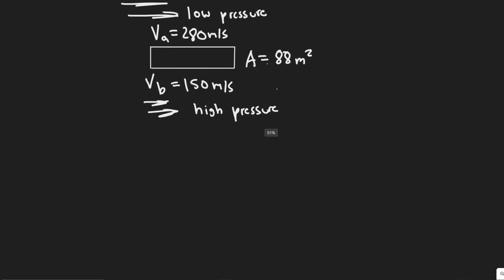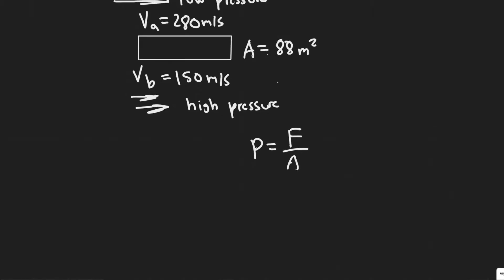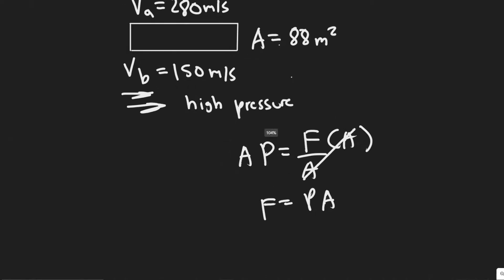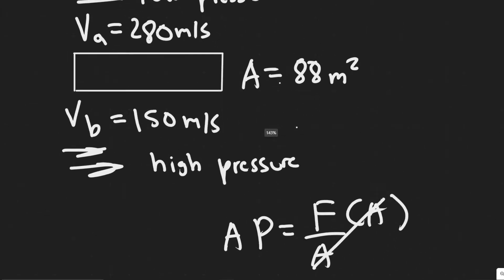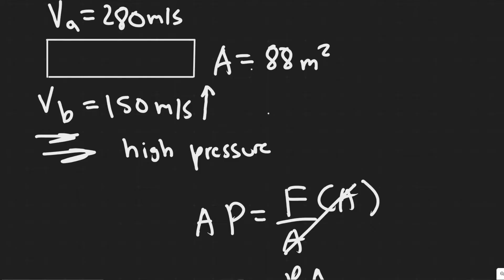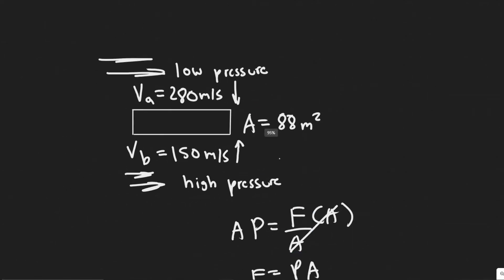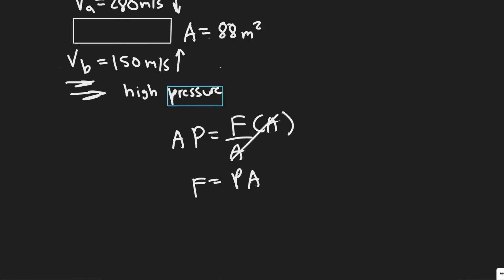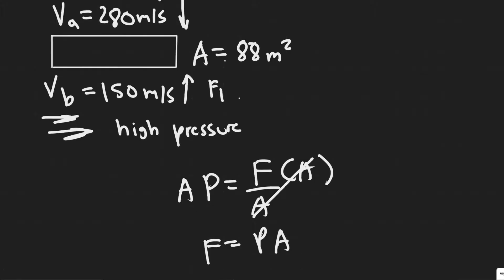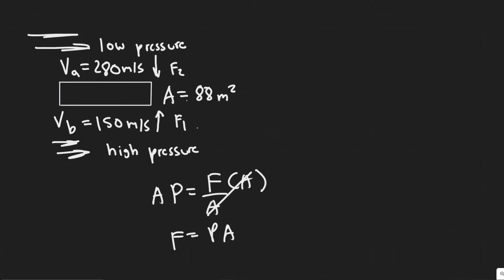Pressure equals force over area. As a result, force equals pressure times area. Notice there's going to be a lift force generated by this pressure — the high pressure on the bottom generates an upward force on the wing area, while the low pressure on top acts downward. But the bottom pressure is much higher, so F1 is much greater than F2. Therefore the net force is F1 minus F2, which points upward — that's your lift force.